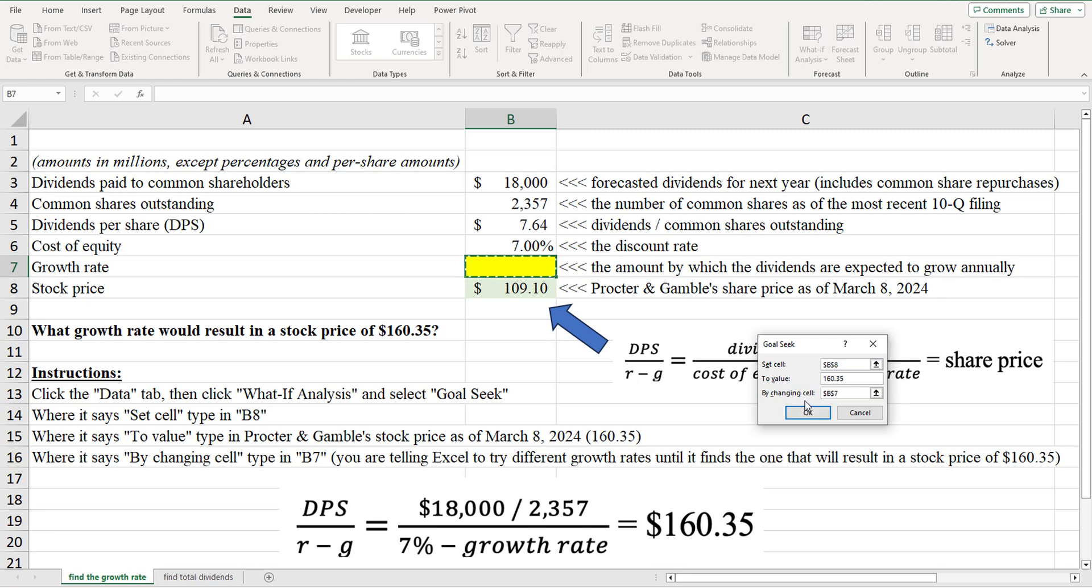Now, before I click okay, what we're basically telling ourselves, we're saying, look, go to this cell right here, B7, the growth rate, and change it. Try different growth rates until you get to the one that results in a share price of $160.35.